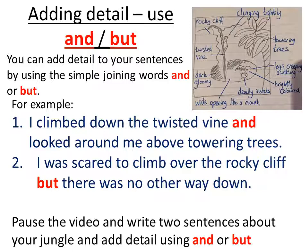For sentence number two, I've looked at my rocky cliff and I thought about using the word 'but': 'I was scared to climb over the rocky cliff but there was no other way down.' Those two sentences match up with my picture. I've used some words from around my picture and included the words 'and' or 'but'. Pause the video now, write two sentences about your jungle, and try to use one sentence using 'and' and one sentence using 'but'. Take as long as you need — you might need to really think about this carefully. Remember to look back at your pictures for ideas.